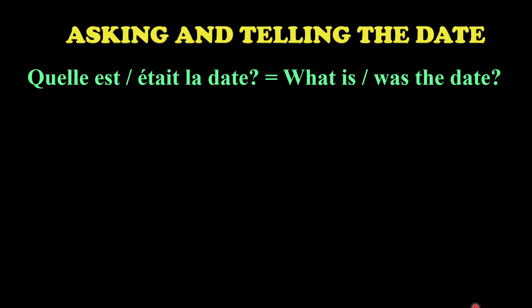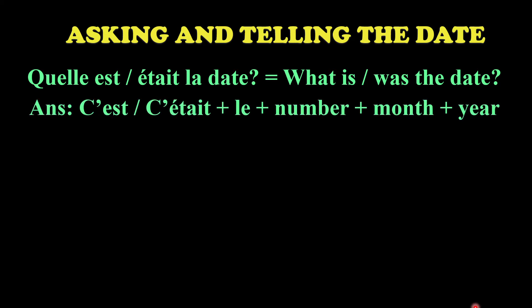Let's begin with the dates. The question you ask when you want to know the date is 'quelle est la date' - when you want to know today's date. So 'quelle est la date' is asking what is the date, and 'quelle était la date' is asking what was the date. 'Est' is the present tense and 'était' is the past tense.